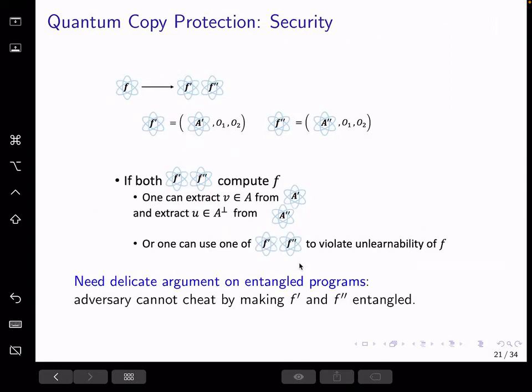I will explain the security proof on a high level. So suppose an adversary is able to produce two programs that both successfully pass the test, then we can do reduction to break either one of our underlying hard problems. So in the first case, we can extract the vector V in A from the first pirate program, and extract the vector U in A perp from the second pirate program. And if the second case doesn't happen, we show that we're definitely in the first case,